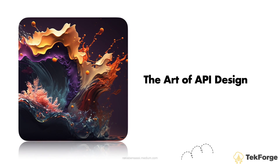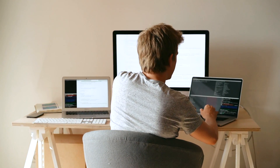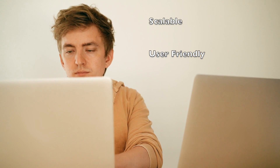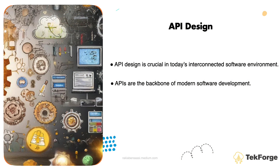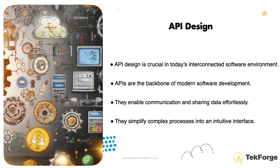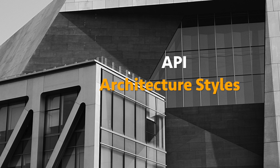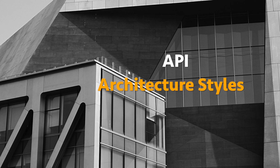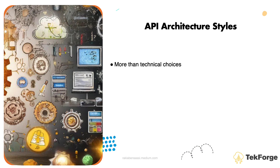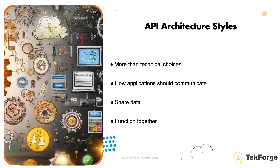The art of API design. We can't talk about software architecture without talking about API design. In this section, we'll uncover the art and science behind creating effective, scalable, and user-friendly APIs. APIs, or application programming interfaces, are the backbone of modern software development. They enable different systems to communicate and share data effortlessly. The beauty of a well-designed API lies not just in the technical details, but also in its ability to simplify complex processes into an intuitive interface. API architecture styles are more than mere technical choices — they are philosophies on how applications should communicate, share data, and function together in our digital ecosystem.